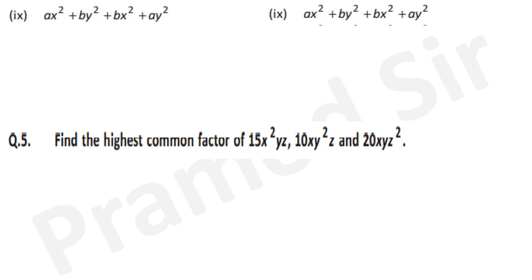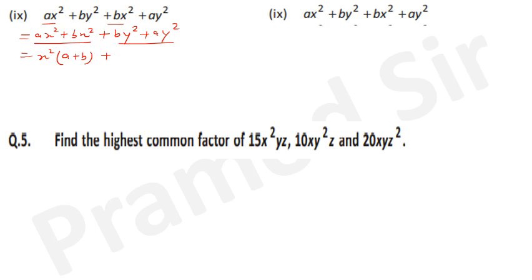Question 9: ax² + by² + bx² + ay². Rearrange: group first and third terms (ax²+bx²) and second and fourth (by²+ay²). Take x² common: x²(a+b); take y² common: y²(b+a) = y²(a+b). Take (a+b) as common: (a+b)(x²+y²). That is your answer.